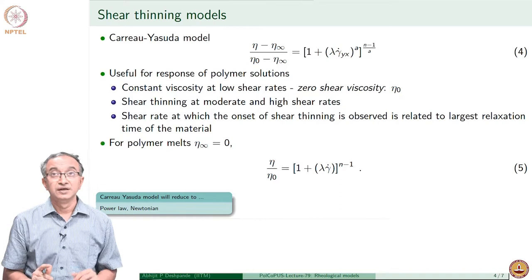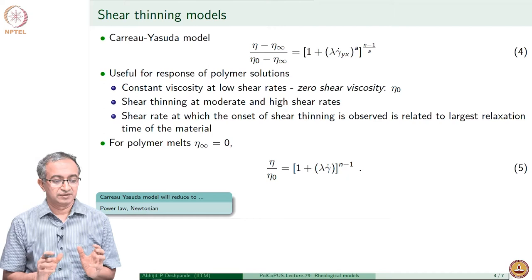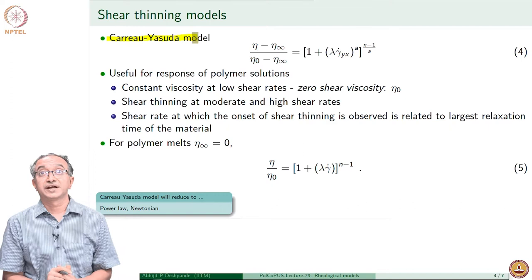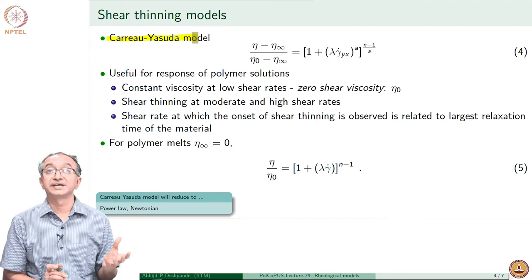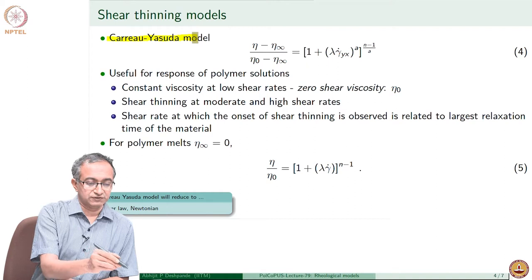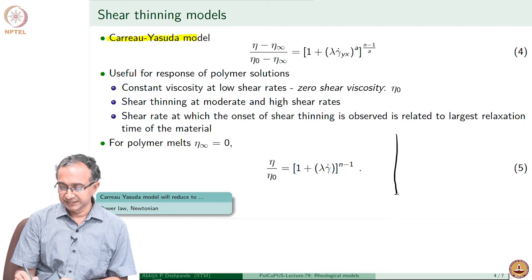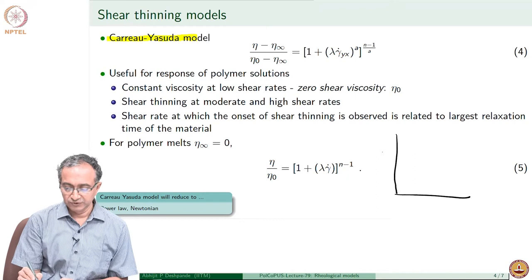Let us look a little more closely at some of the viscous models. The Carreau-Yasuda model is one of the most commonly used models for describing the non-Newtonian nature of viscosity. It is a model which can describe shear thinning very well. The general response is that if we look at stress as a function of strain rate, we can examine how viscosity changes across different flow conditions.